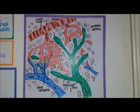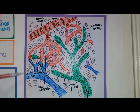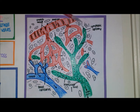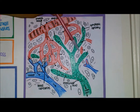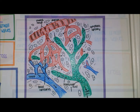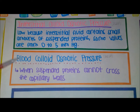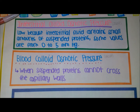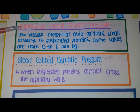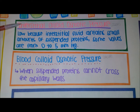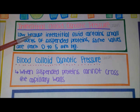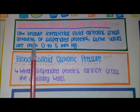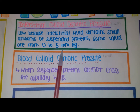The extra 10 percent of interstitial fluid not reabsorbed at the venule side goes through the lymphatic capillaries to return to the bloodstream. Blood colloid osmotic pressure occurs when suspended proteins cannot cross the capillary walls. Interstitial colloid osmotic pressure becomes low when the interstitial fluid contains small amounts of suspended proteins, with values ranging from 0 to 5 mmHg.